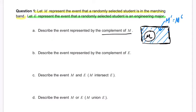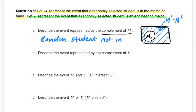So we can say the complement of M is a randomly selected student that is not in marching band. Since M is the randomly selected student in marching band, its complement is a random student not in marching band.